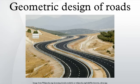The alignment is the route of the road, defined as a series of horizontal tangents and curves. The profile is the vertical aspect of the road, including crest and sag curves, and the straight grade lines connecting them. The cross-section shows the position and number of vehicle and bicycle lanes and sidewalks, along with their cross slope or banking. Cross-sections also show drainage features, pavement structure and other items outside the category of geometric design.